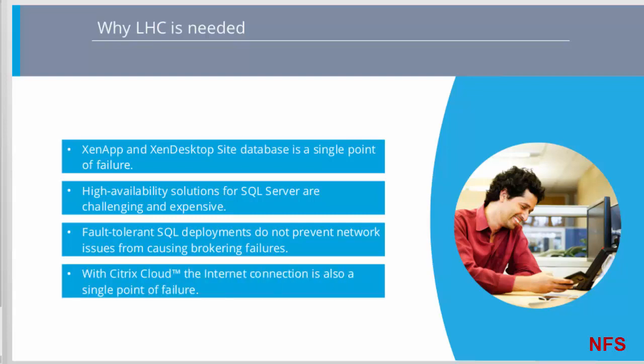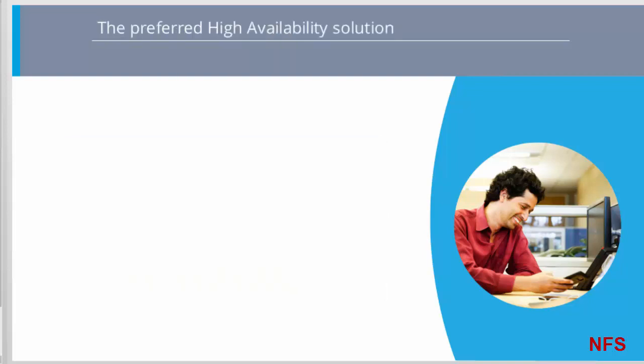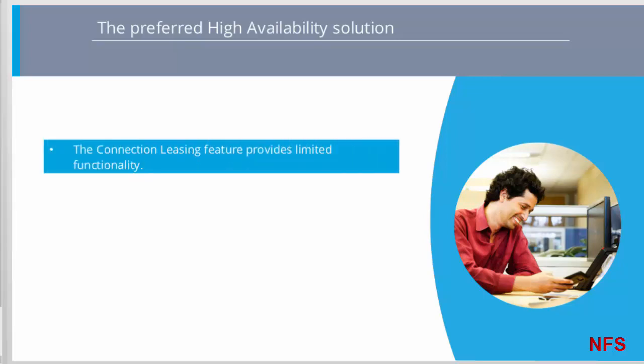And if the connection to the cloud control plane is lost, then this means the connection to the delivery controller, the site database, and the ability to broker new connections is also lost. So why is LHC the preferred high availability solution for XenApp and XenDesktop environments? Connection leasing was a partial solution to disrupted site database connections in previous XenApp and XenDesktop releases since 7.6, but is quite limited in its functionality and comes with a number of caveats and restrictions.